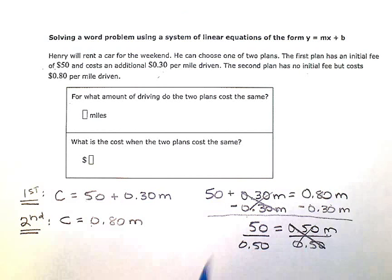And then when I simplify on the left, I'm going to have 50 divided by 0.5, which is 100, is equal to m. So I know when I'm at 100 miles, the two plans will cost the same.